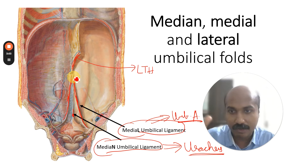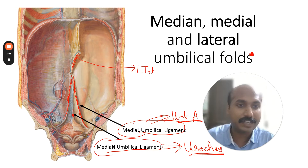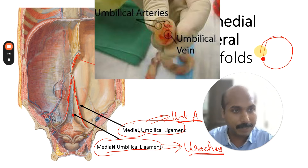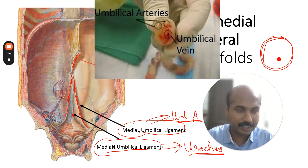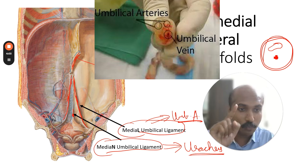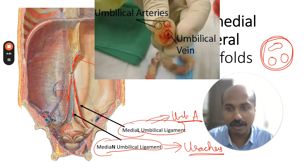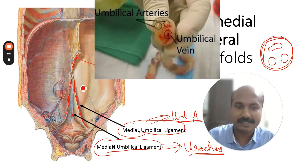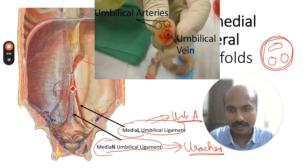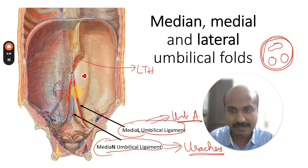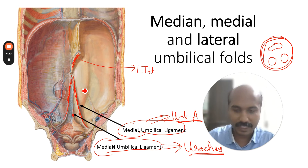All three vessels converge toward the umbilicus. If you take a cross-section of the umbilical cord, you will find one collapsed umbilical vein and two umbilical arteries. Those three structures in the umbilical cord correspond exactly to the three remnants seen on the posterior aspect of the anterior abdominal wall: the two obliterated umbilical arteries and the obliterated umbilical vein.